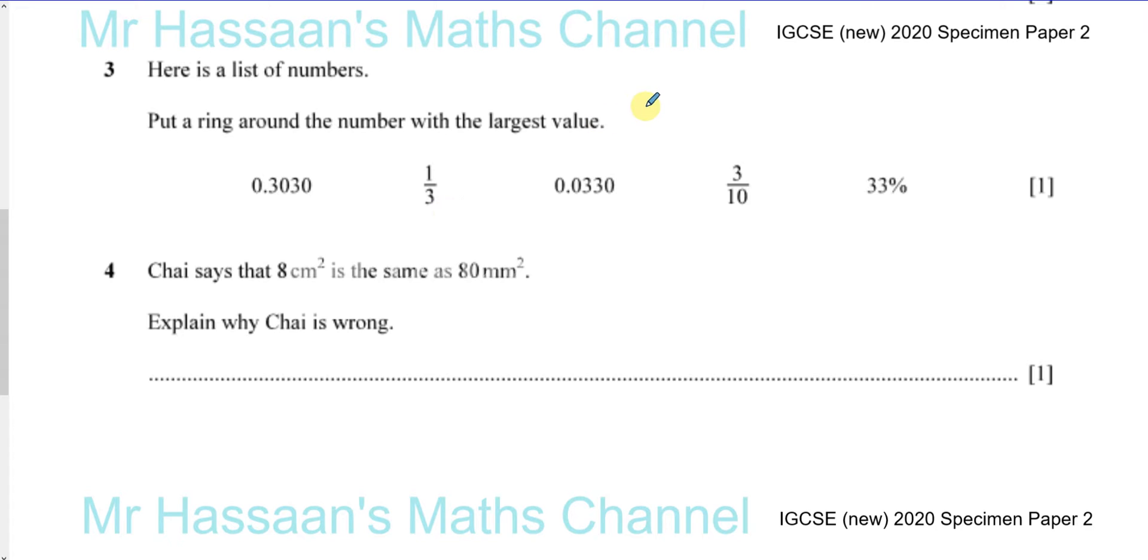Now, 1/3 is the same as 0.333. Okay, if you're not sure, you can just stick it in your calculator, 1 divided by 3 equals. This would come up, and then you press the S to D button. I'll just show you in case you're not sure.